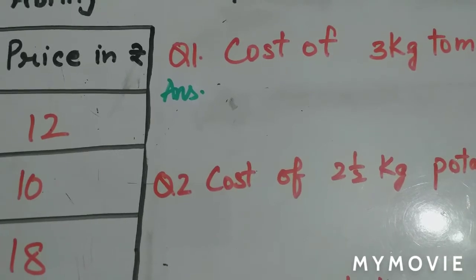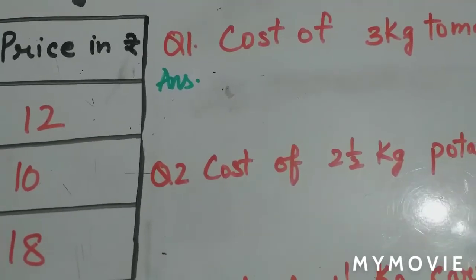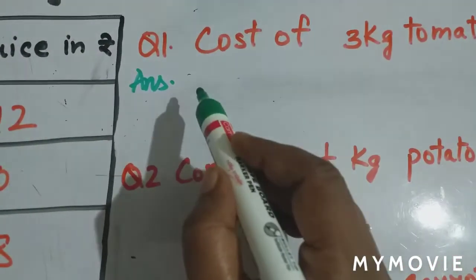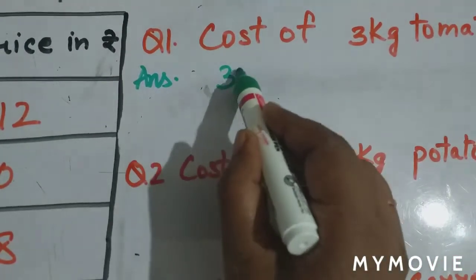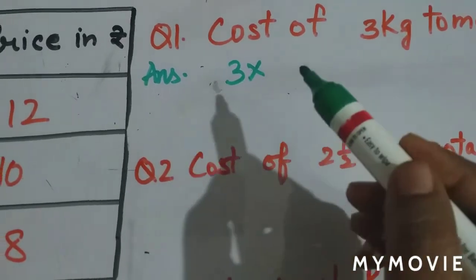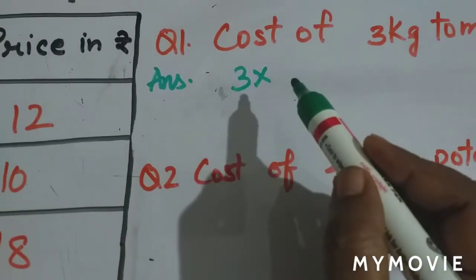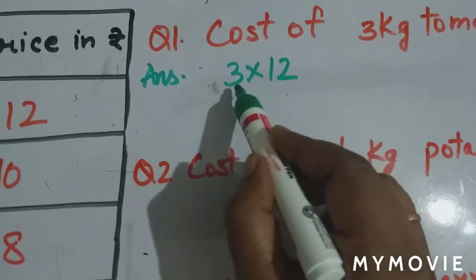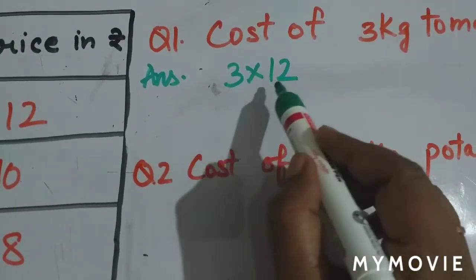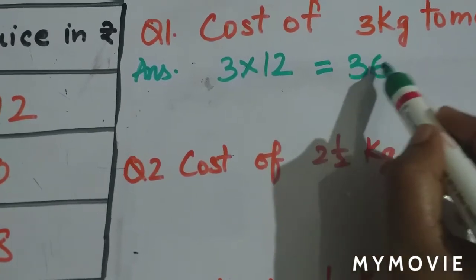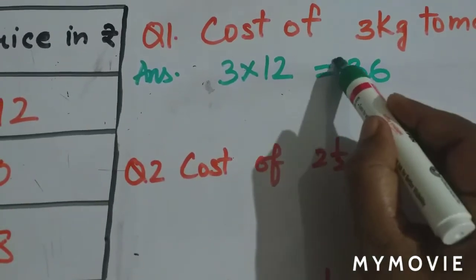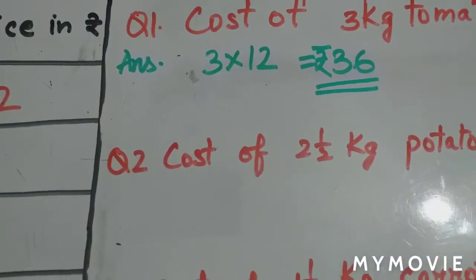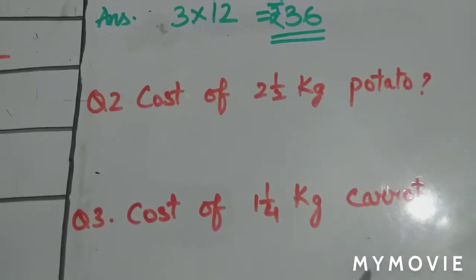Now we can calculate the cost of 3 kg tomato. Cost of 3 kg will be 3 multiplied by the cost of 1 kg, that is 12 rupees. 3 multiplied by 12 will be 36, so this is your answer, 36 rupees.